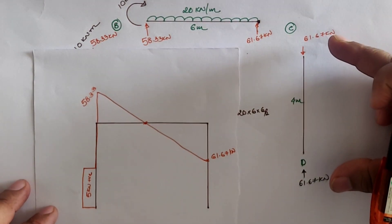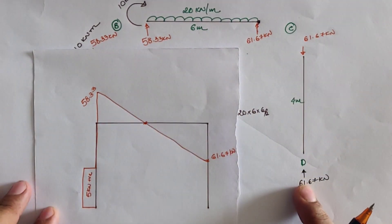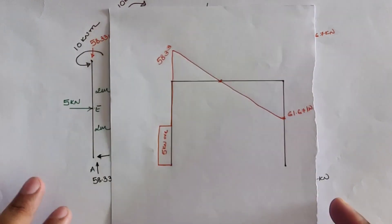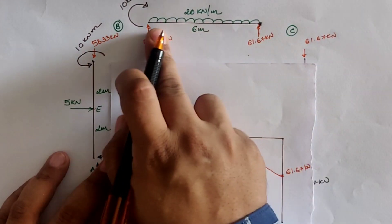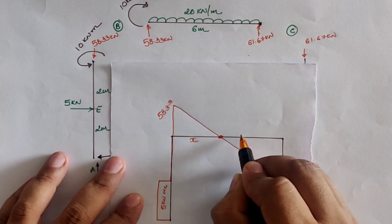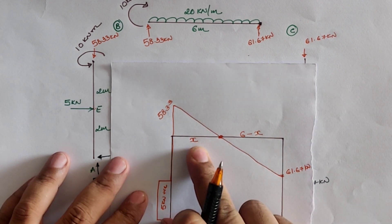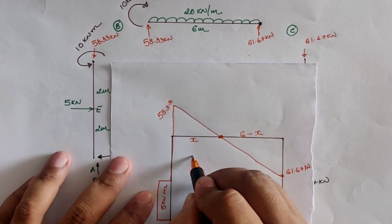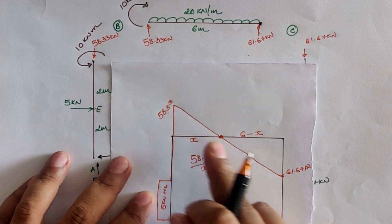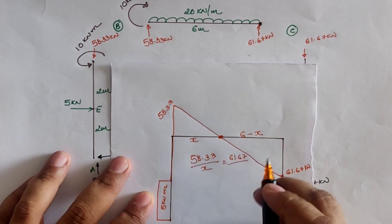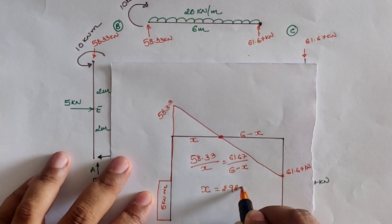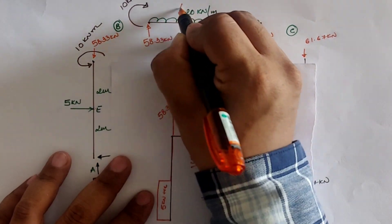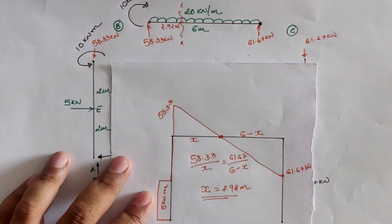For member CD there is no shear load, so the diagram is a straight line. In the BC span, there is a point of zero shear force where maximum bending moment occurs. With the total span six meters, assuming x meters from location B, we apply the similar triangle rule: 58.33 divided by x equals 61.67 divided by (6 minus x). Solving gives the zero shear location at x equals 2.92 meters from point B.